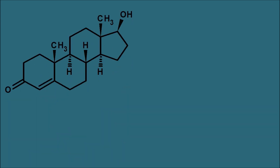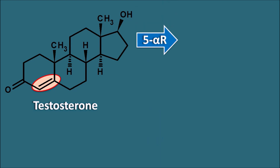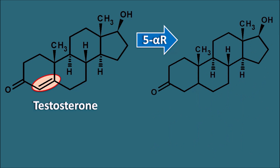The androgen in our physiological system is testosterone. Testosterone is a steroid nucleus with delta-4-3-one, meaning it has a double bond at the fourth position and a ketone at the third position. When this double bond is saturated, it results in increased activity. Testosterone can undergo reduction by 5-alpha reductase enzyme to be converted into dihydrotestosterone, commonly known as DHT.